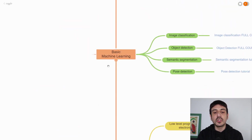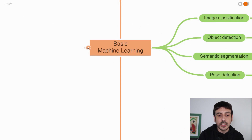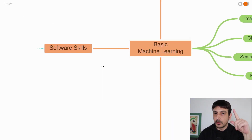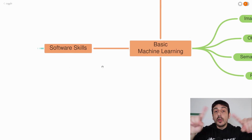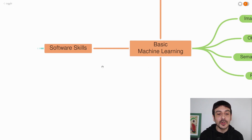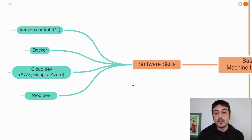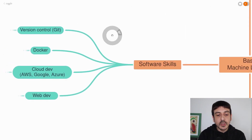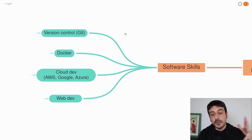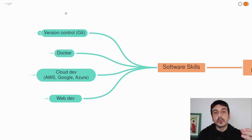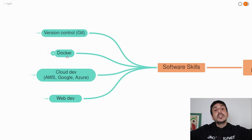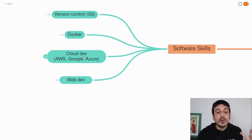Now let's take it back. From basic machine learning, we could take another path — the software-related skills. As a computer vision engineer, you are not working in a vacuum; you are working with other software developers, building products, doing things which involve software. The more software-related skills you have, the much better for you. Some very specific examples of important software skills in computer vision: you definitely need to know how to work with version control software like GitHub, you need to know how to work with Docker, it's very important to know how to work with a cloud provider such as AWS, Google Cloud, or Azure, and it's also a plus if you are familiar with web development technologies.